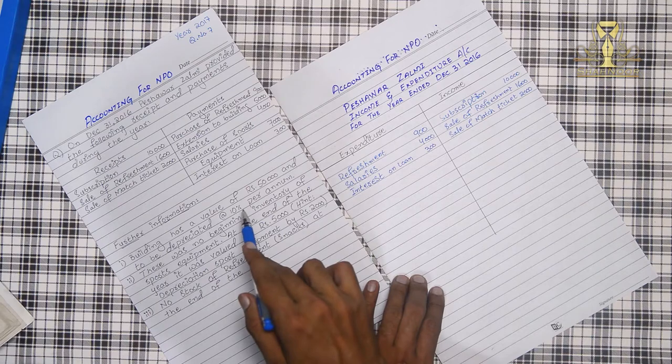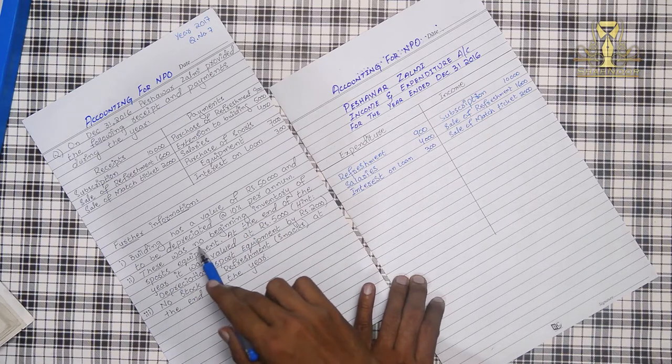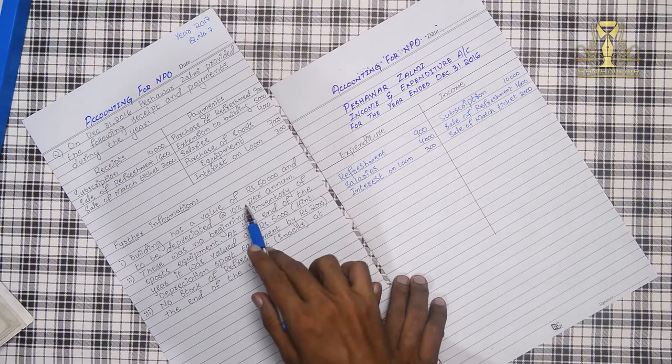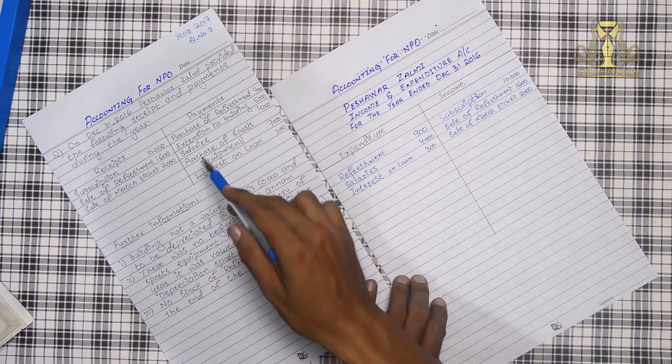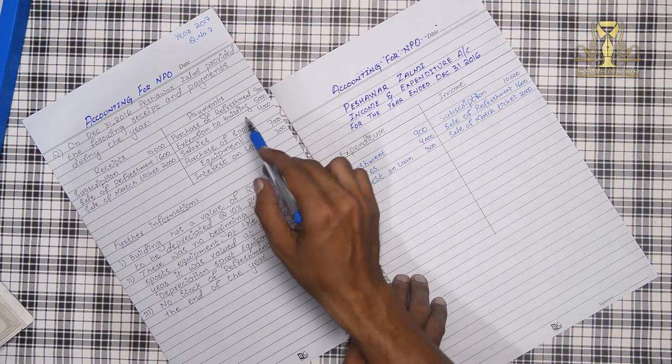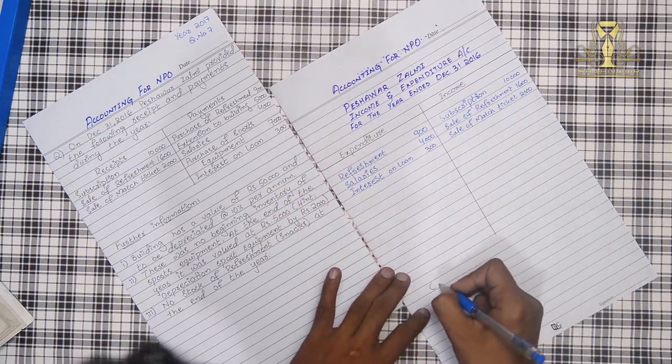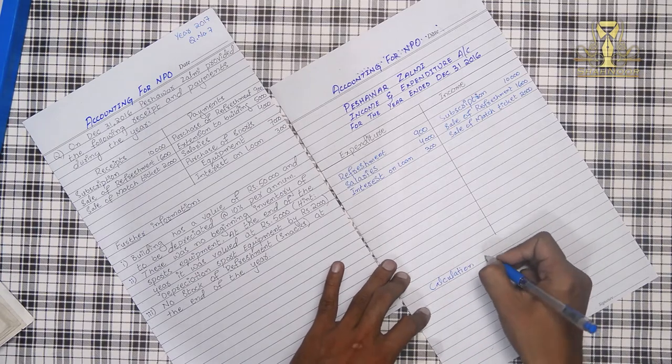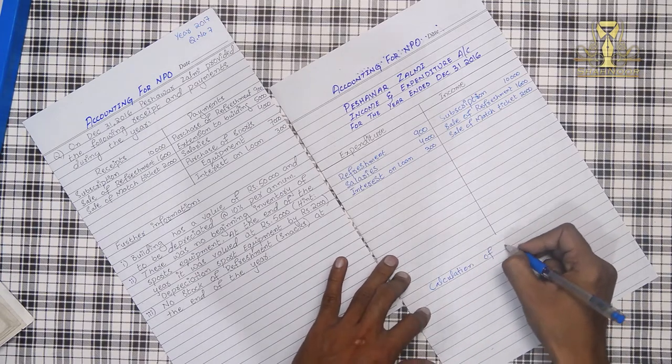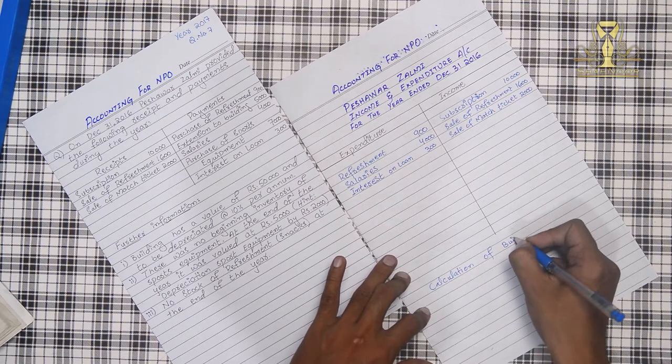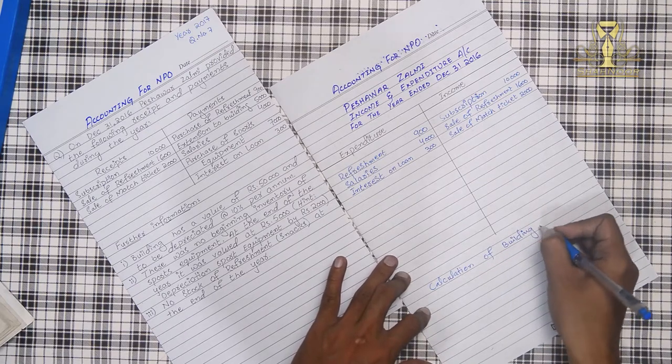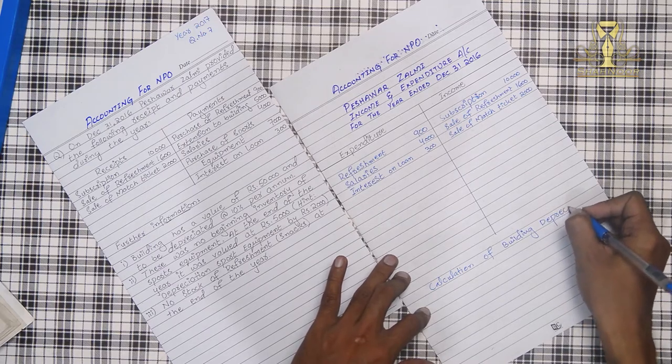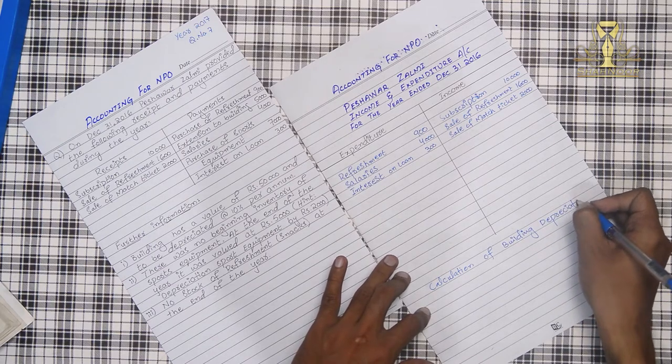Further information: building has a value of Rs. 50,000 and to be depreciated at 10% per annum. Building has a value of Rs. 50,000 but with this extension that will be added. So here we will start with this calculation. We will show the calculation of building depreciation at 10%.